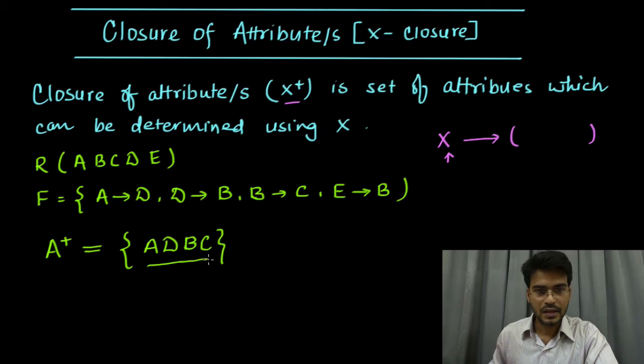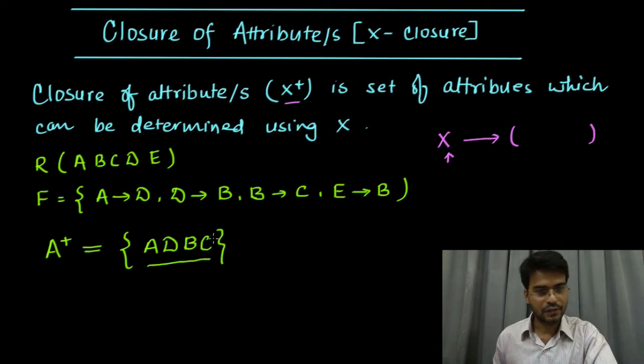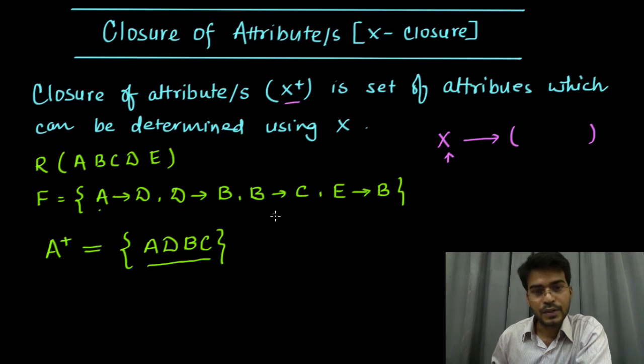This A, B, C, and D attributes—I mean the set of these attributes—are closure of A. So it is something like A is a person who knows D, D knows B, B knows C, and E knows B.